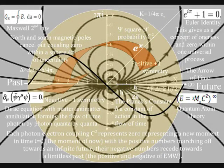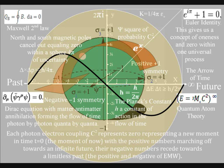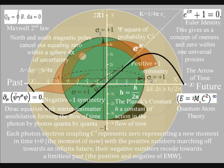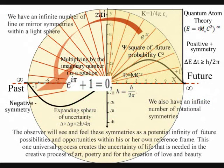This whole process can be seen as a process of spherical symmetry forming and breaking. There is an infinite number of line symmetries within a sphere, and also an infinite number of rotational symmetries.